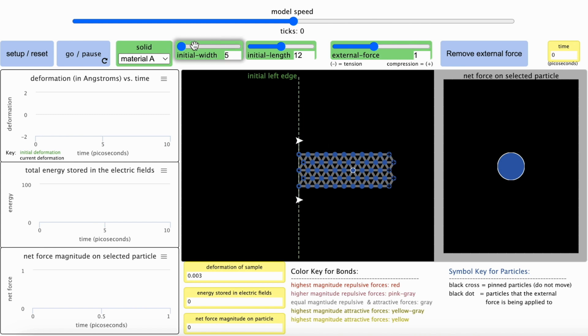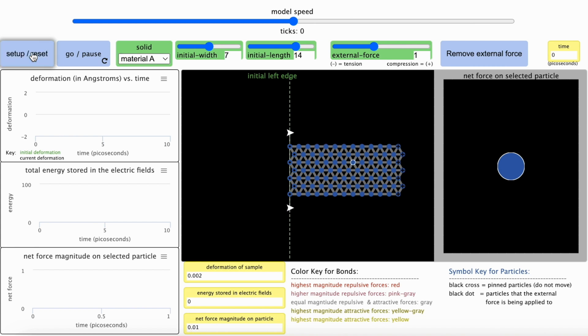Adjust either of these sliders to change the sample size. Use this chooser to change the type of material. Changing the material type doesn't change the ratio of external force to deformation, but it will change other aspects of the material behavior. All of these changes to the sample will only take effect after you press Setup Reset again.